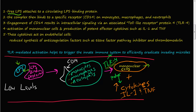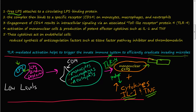The activated mononuclear cells also produce cytokines, specifically interleukin-1 and tumor necrosis factor. These are vasodilators that increase vascular permeability. These cytokines act on endothelial cells and cause them to reduce the synthesis of anticoagulation factors such as tissue factor pathway inhibitor and thrombomodulin. In summary, LPS goes through several steps to activate the immune system via TLR-mediated activation, triggering the innate immune system to effectively eradicate the microbe.